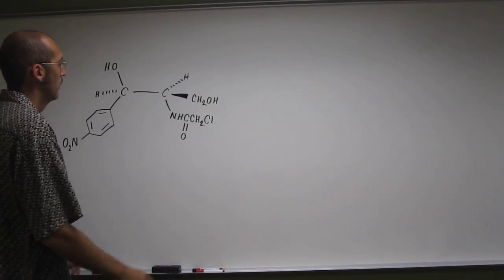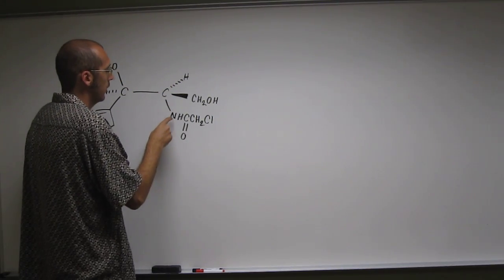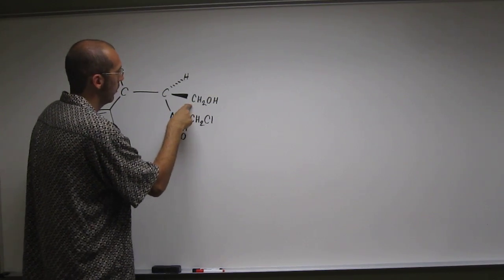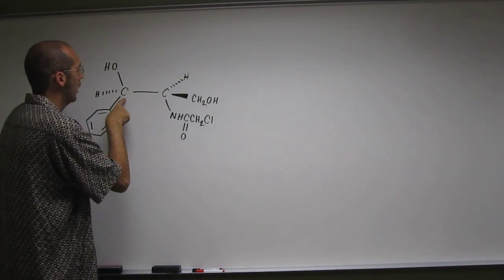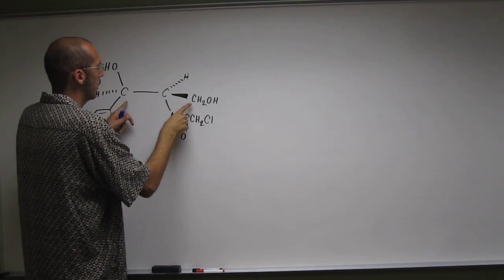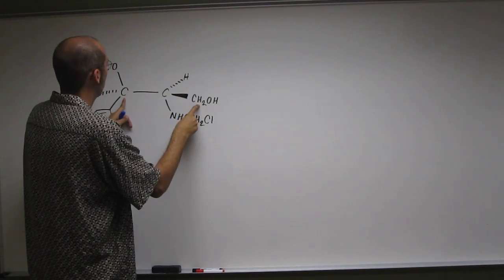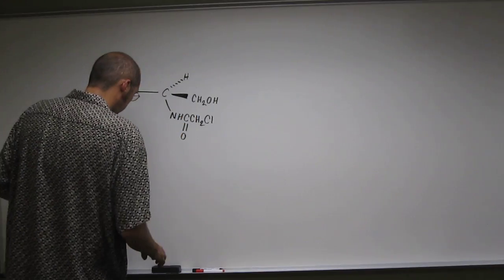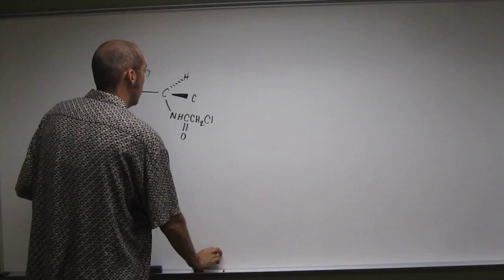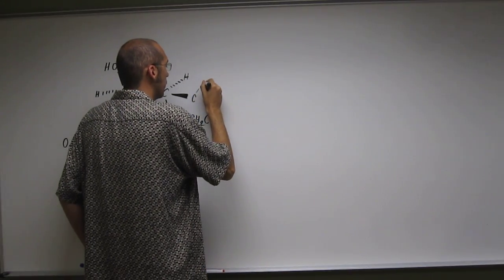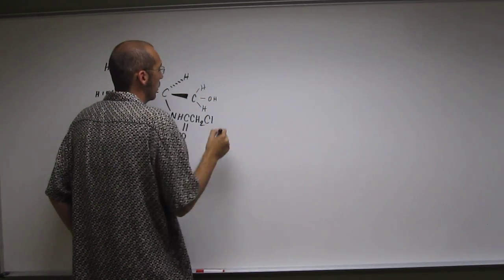This carbon seems obvious that it's a stereocenter, but let's just see. We got it attached to a nitrogen. That's different than a carbon, which is different than a hydrogen. So there's three groups. And then we got a carbon over here. Carbon and carbon are the same, right? But this carbon is attached to two hydrogens and an oxygen. If you can't see that, you might want to draw that out. So it's attached to two hydrogens and an OH group.